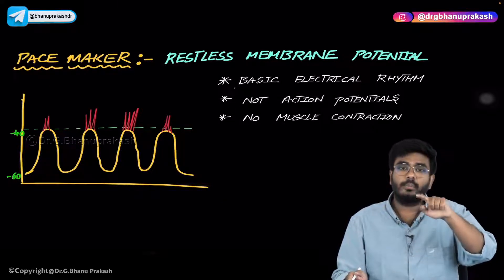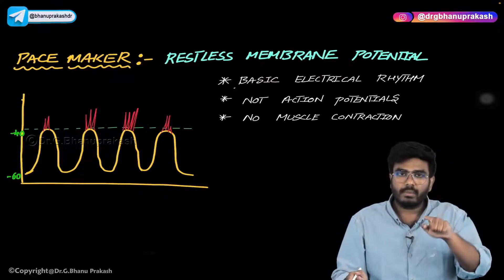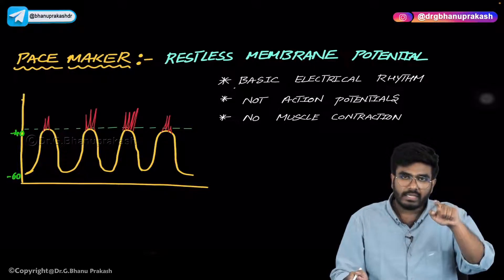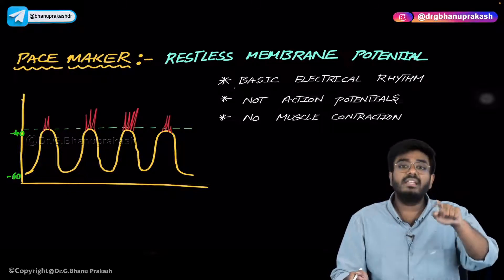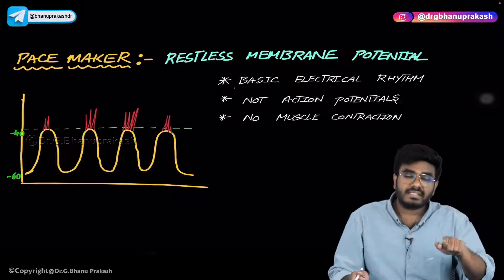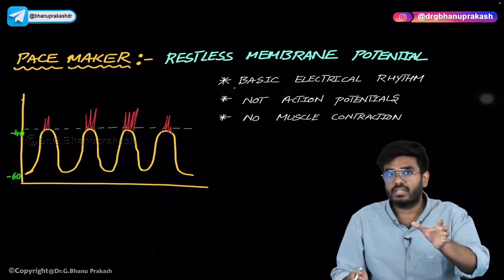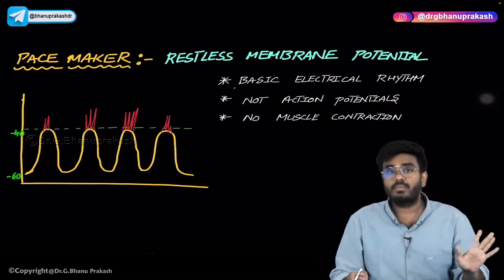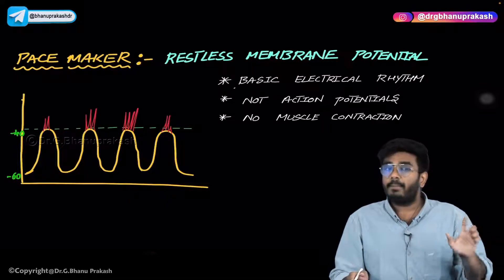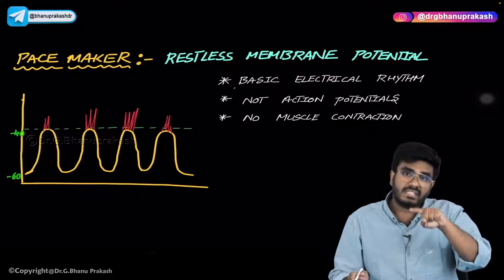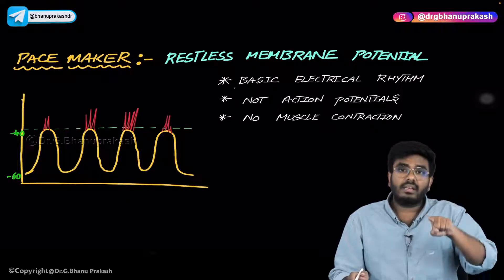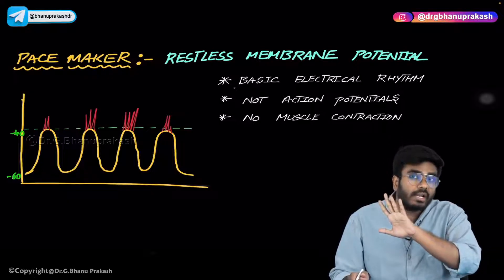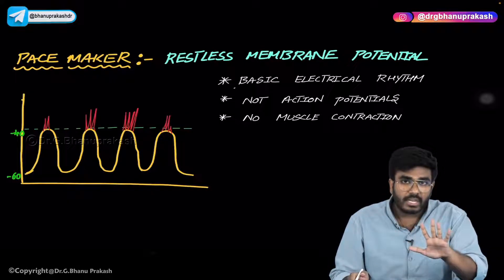From minus 60 it goes to minus 40 and comes back, then goes to minus 40 again — there is restlessness in the membrane potential. This is not the action potential. Because of this rhythm, there is no contraction of the GI muscle.